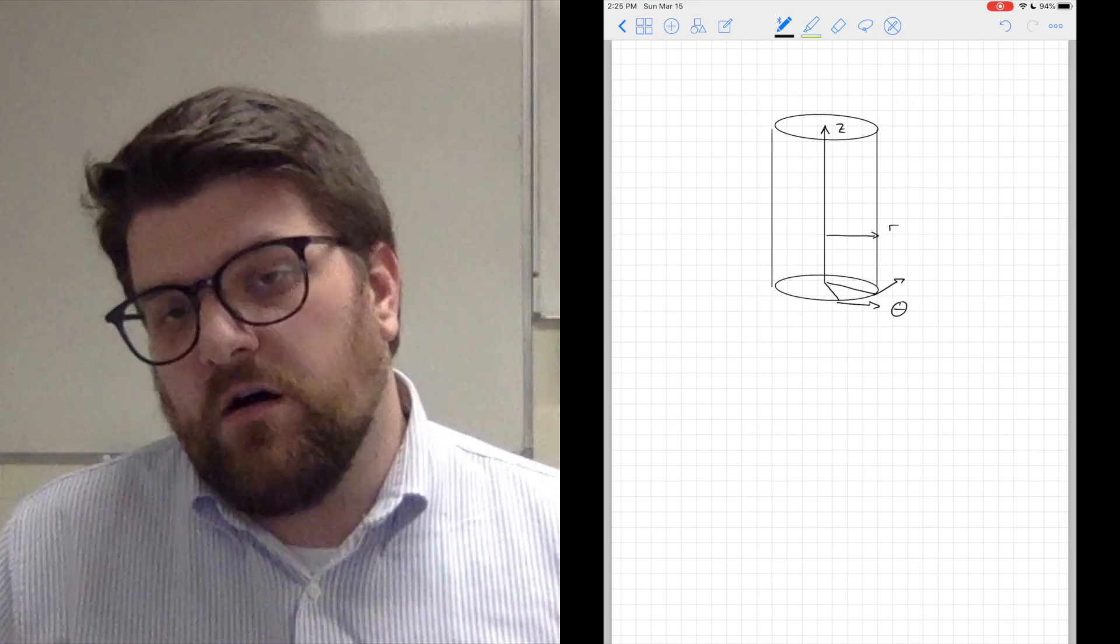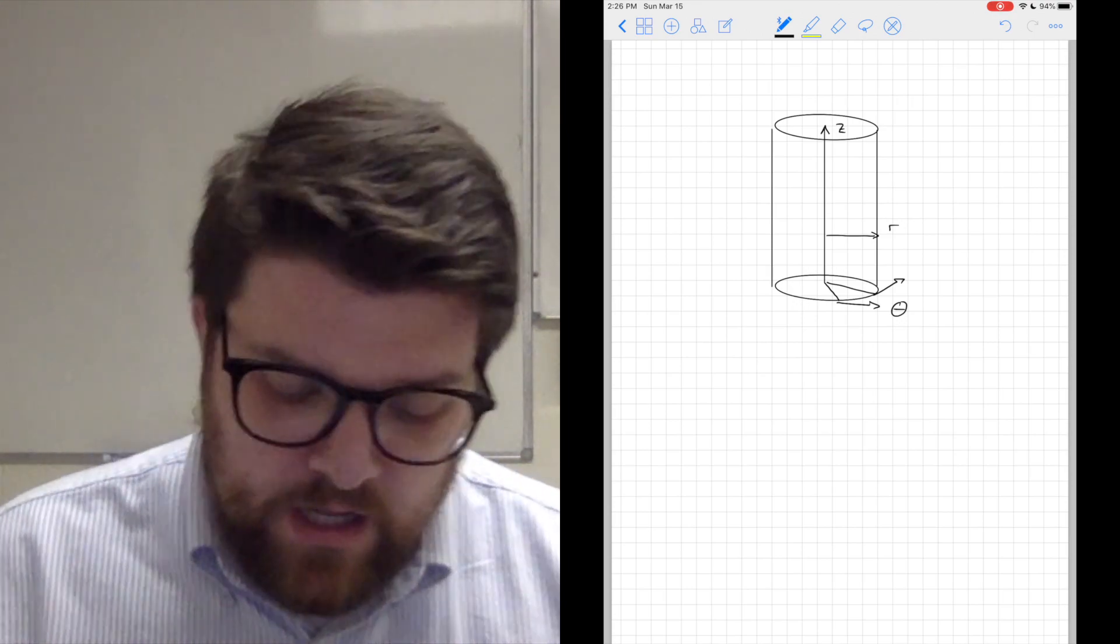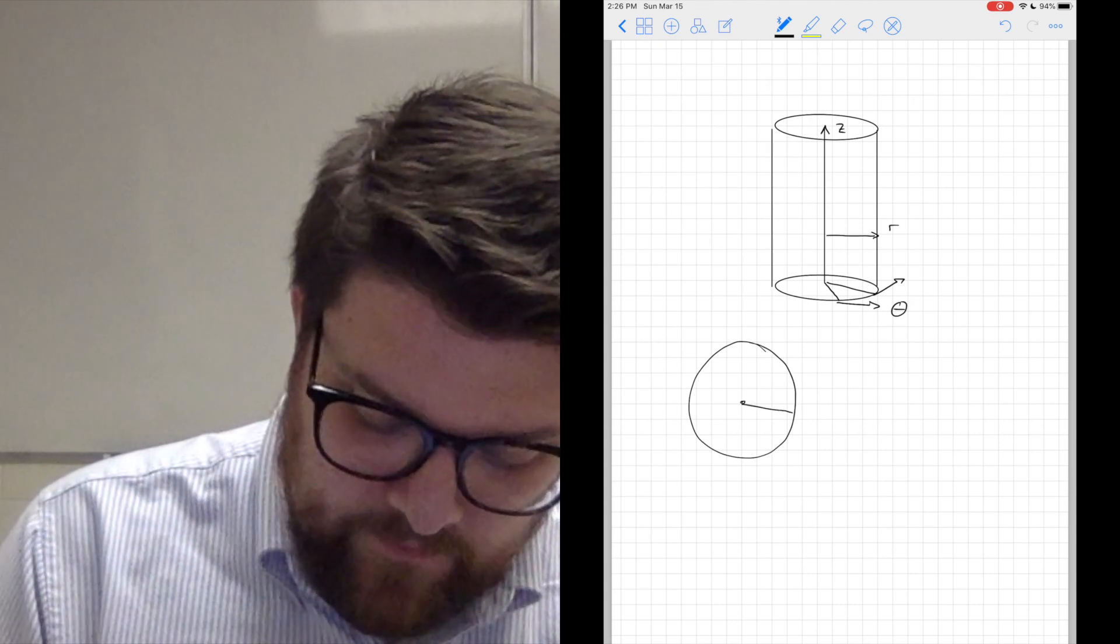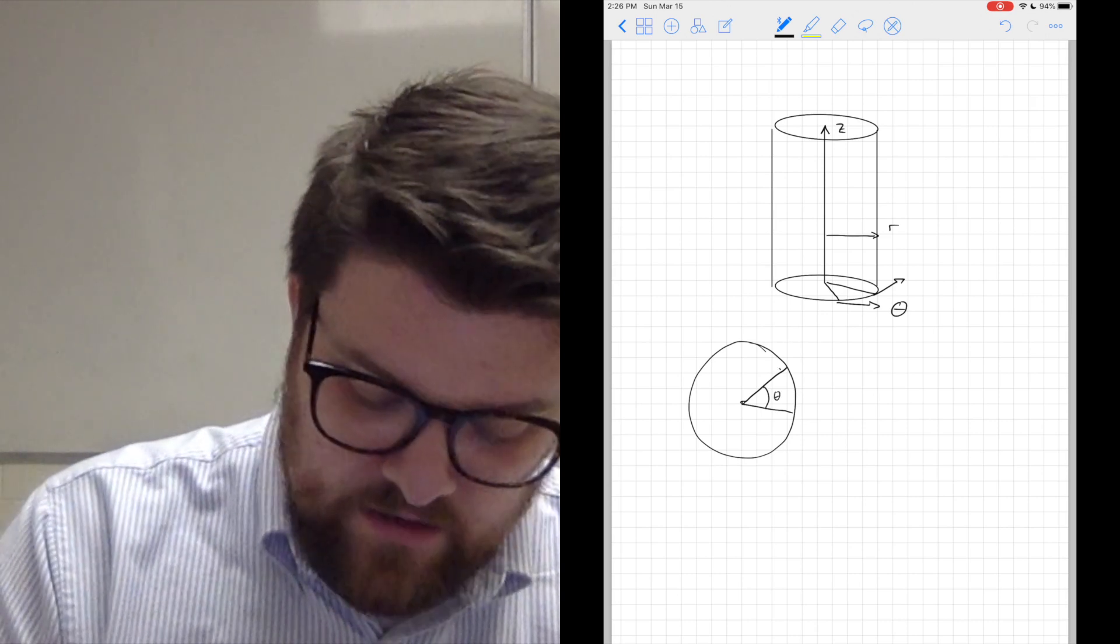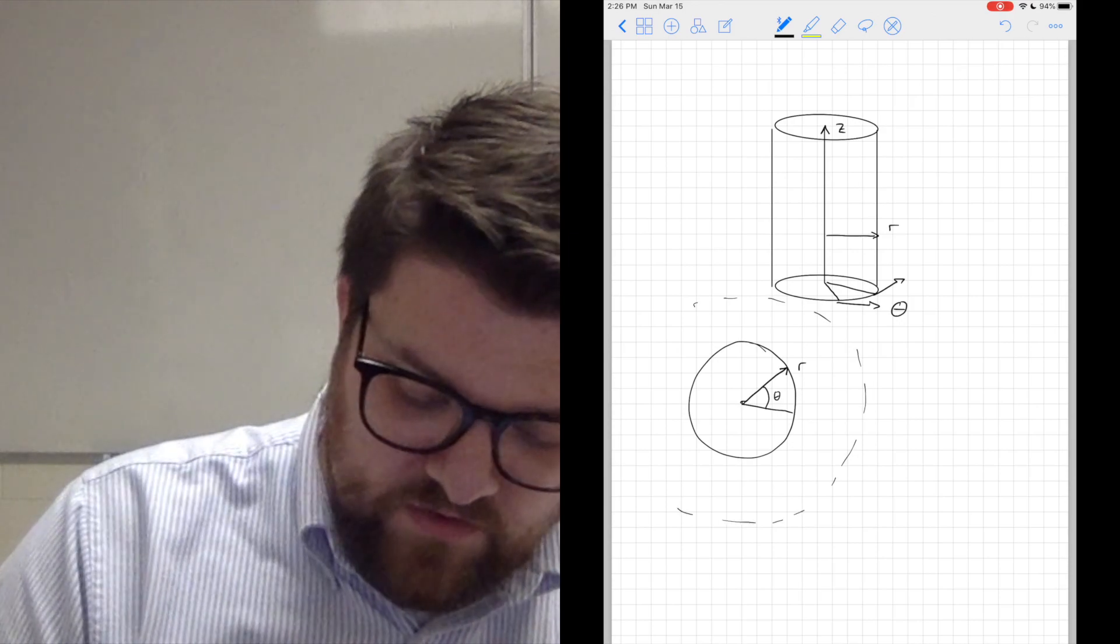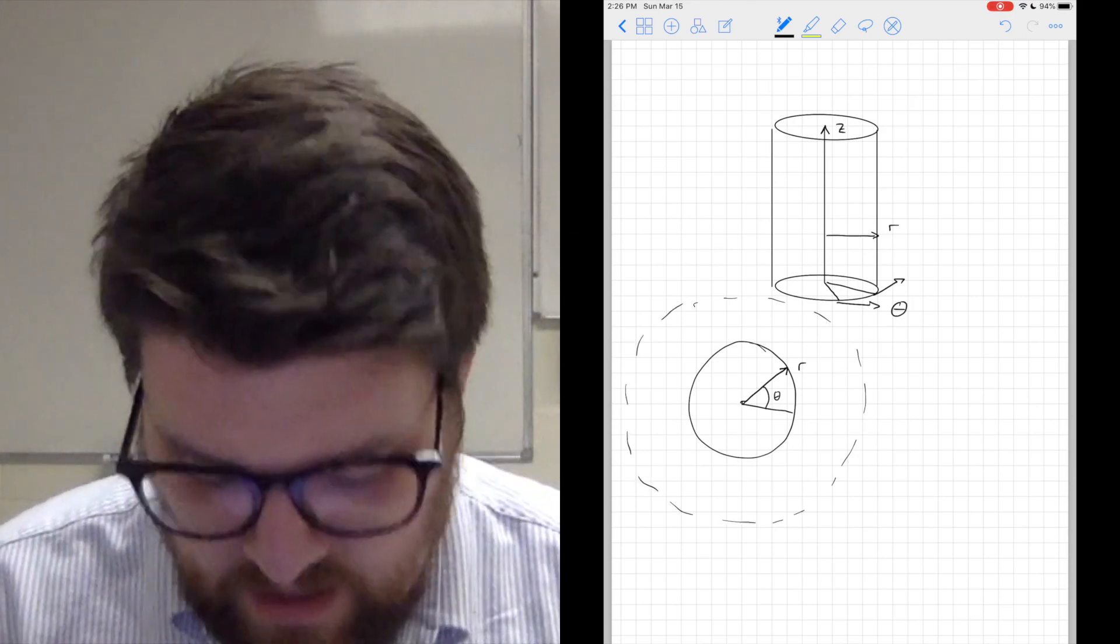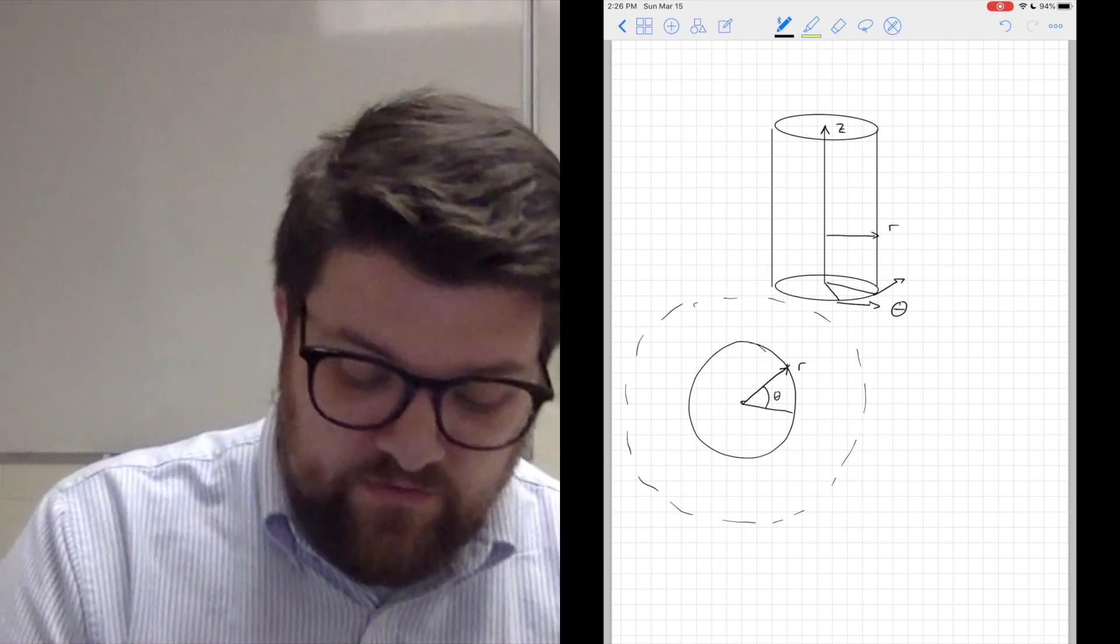All three of these are perpendicular to each other, much like X, Y, and Z are. But now it allows me to talk about some theta here, some R out—maybe it's not the full circle. Maybe I'm only part of the way through some area. It allows me to talk about position in a very different way.